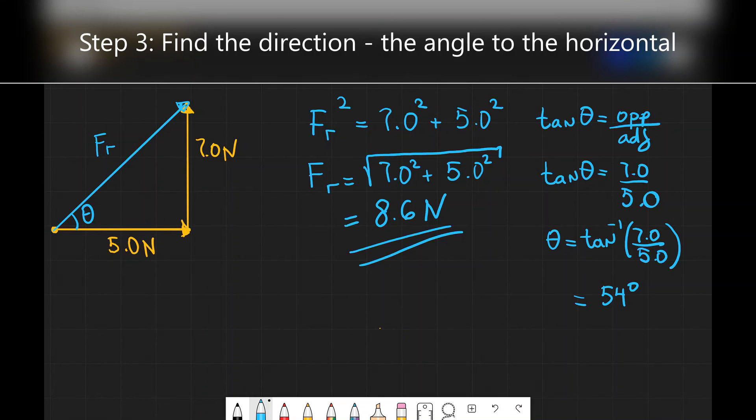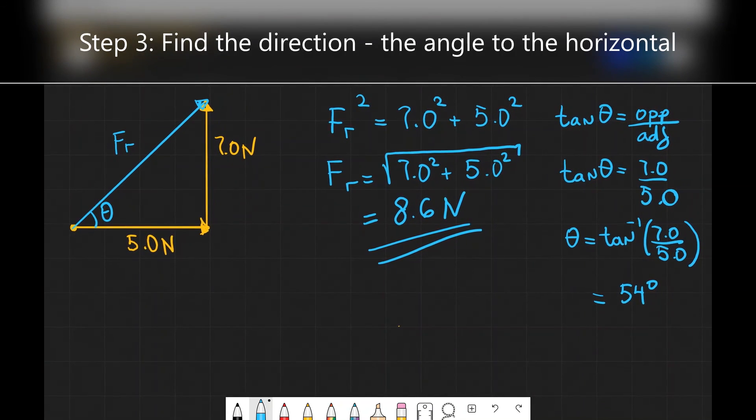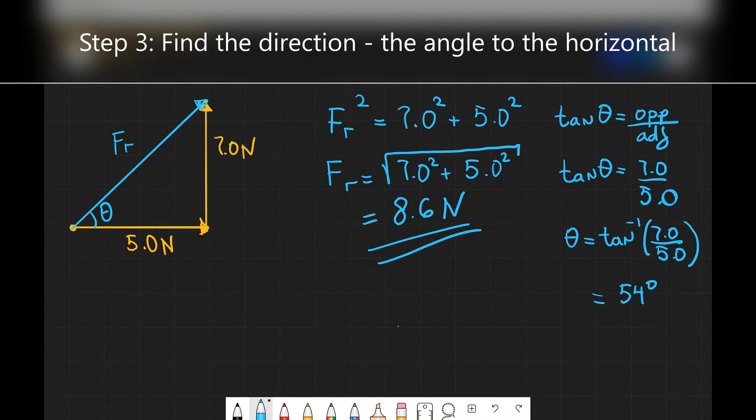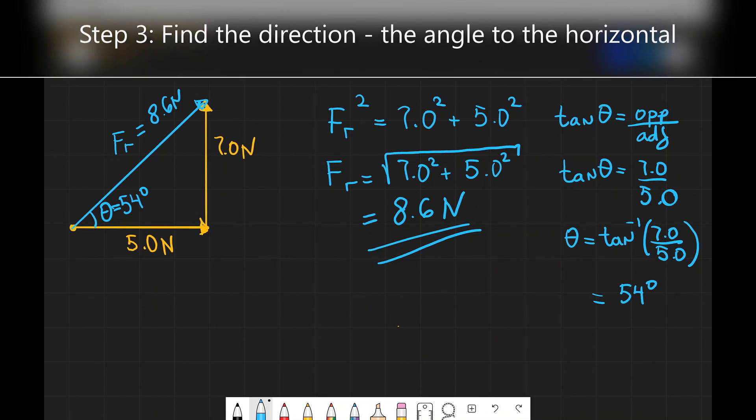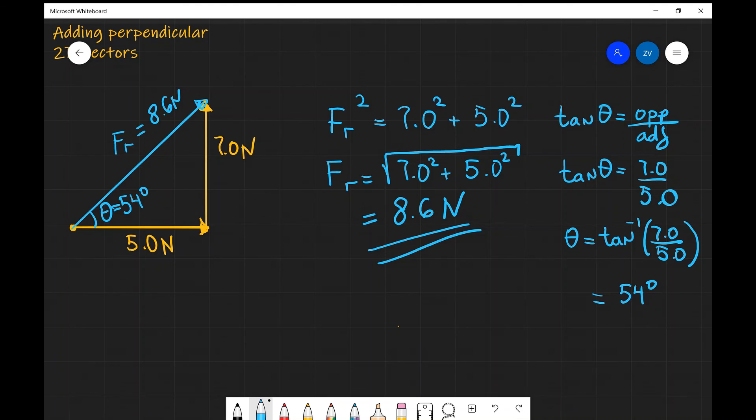And there we have it. We have the magnitude of the force. So this FR is actually equal to 8.6 newtons and we have the direction of this vector which is 54 degrees. If there are any questions as always please feel free to leave a comment and please also consider subscribing. Thank you.